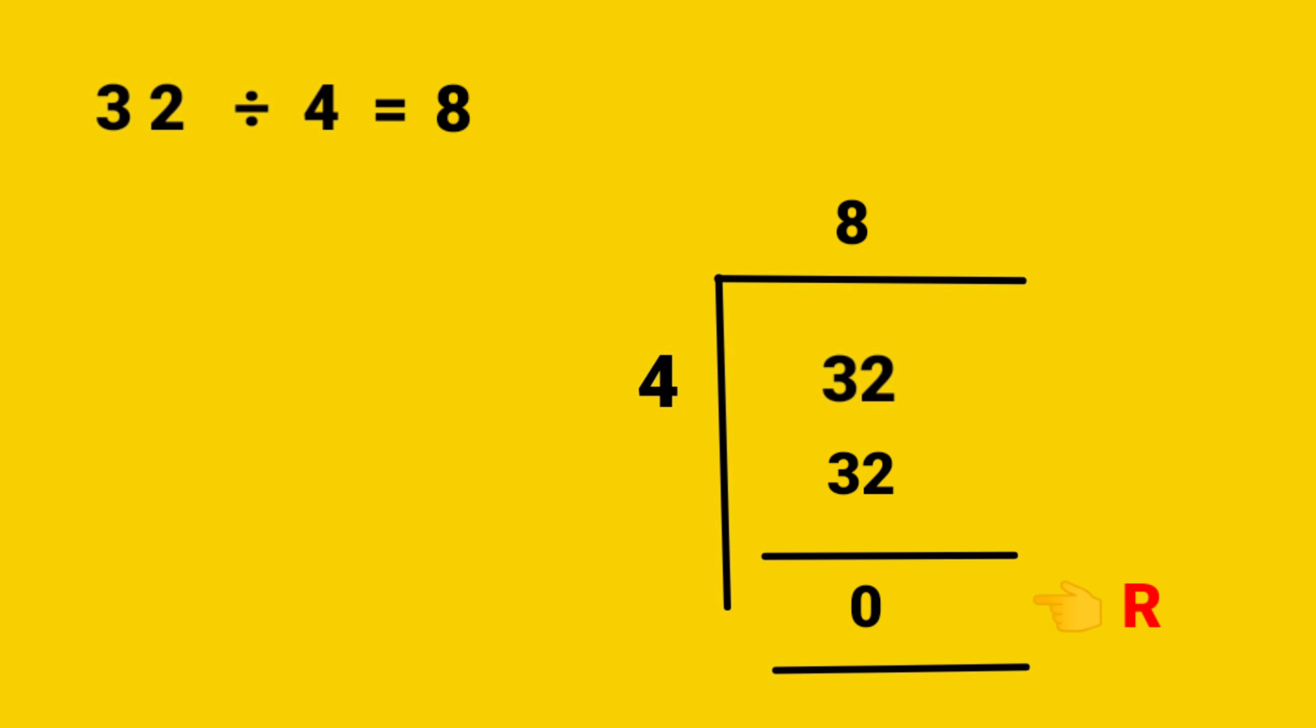So, the remainder is 0, quotient is 8. So, the answer is 32 divided by 4 is equal to 8. Ok.